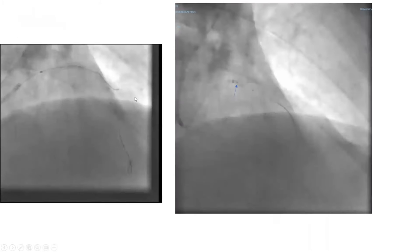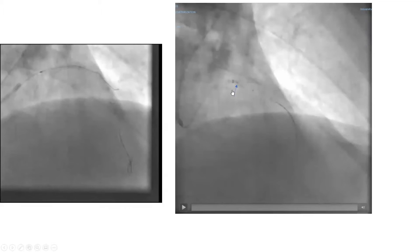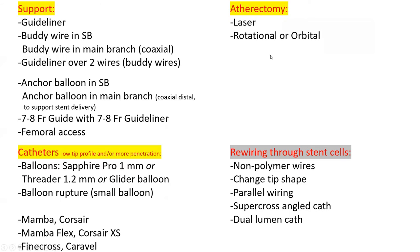The third axis is to do atherectomy. You can do laser atherectomy, particularly in heavily fibrotic tissue, or rotational or orbital atherectomy in heavily calcified lesions. The decision regarding what to start with depends on calcium. If the lesion is heavily calcified and we're not able to advance a small balloon, our immediate next step would not be to increase support with guideliner and body wiring — our immediate next step would be rotational atherectomy. But if it's not heavily calcified, we focus on those other ideas.